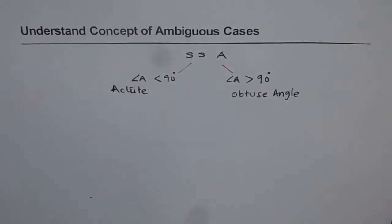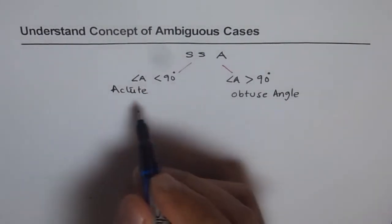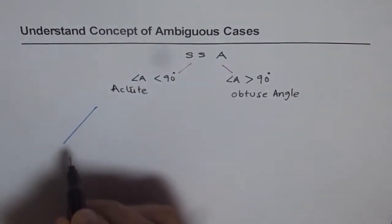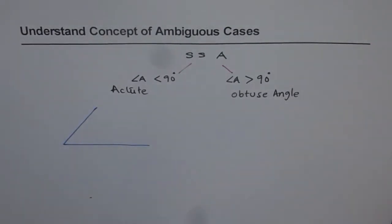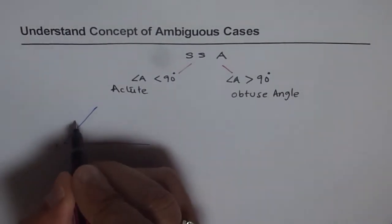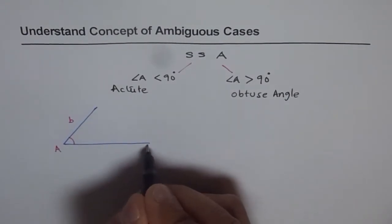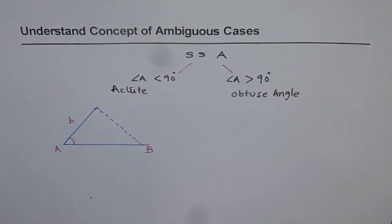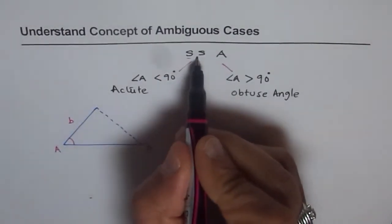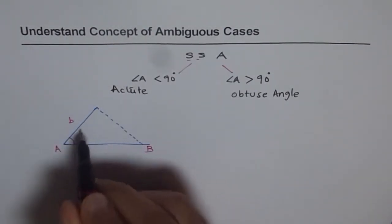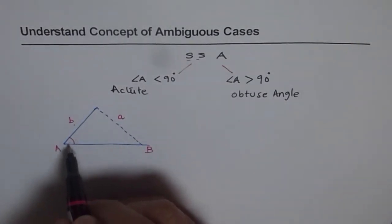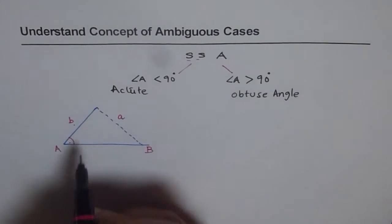In case of an acute angle, let us consider it first and then we will discuss the obtuse angle. Let us draw a triangle. We are given angle A, and we will call the adjacent side as side B with vertex B. We are given side, side, and angle — that means we are given side B opposite to angle B, and side A opposite to angle A. As you can note, the angle is not the included angle between the two sides — this is the SSA condition.